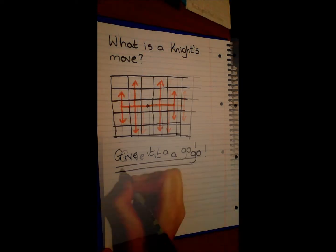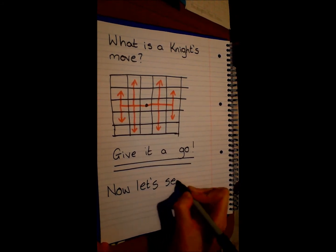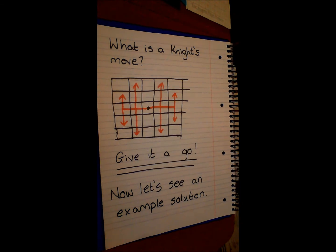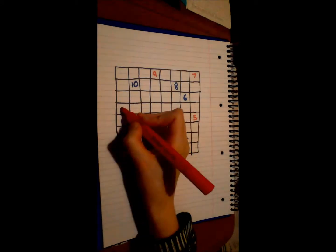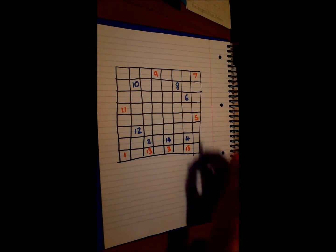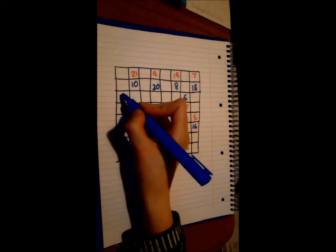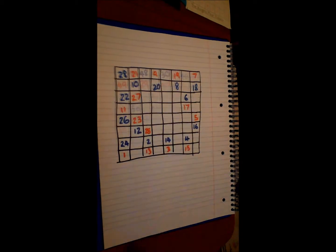So now you know the move, see if you can find a Knight's Tour. If you're struggling, let's see an example solution. For simplicity we'll start in the bottom left hand corner. Working round the edge is the easiest way to stop you from getting in a knot. Since we want to fill up the edge first, you'll most likely have to reverse your direction at some point.